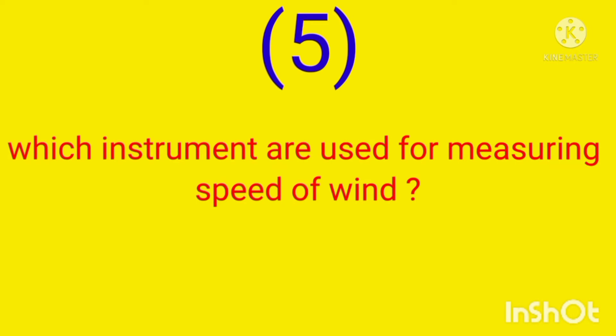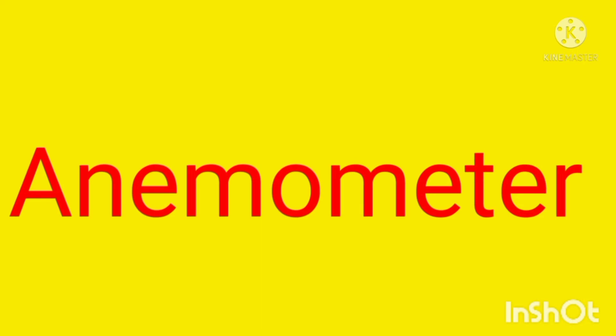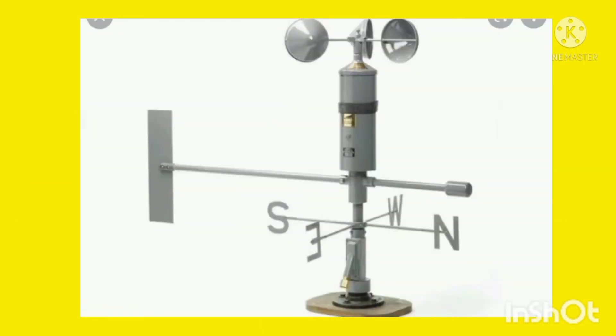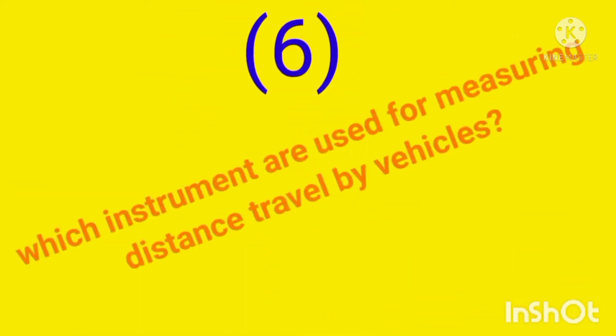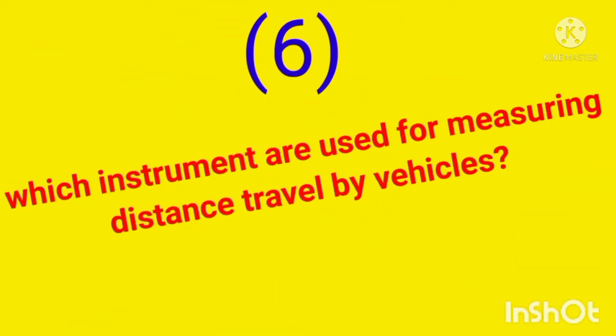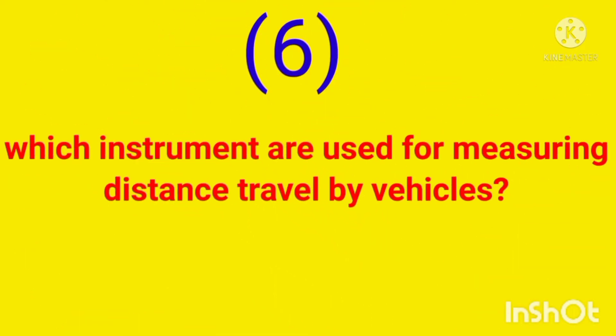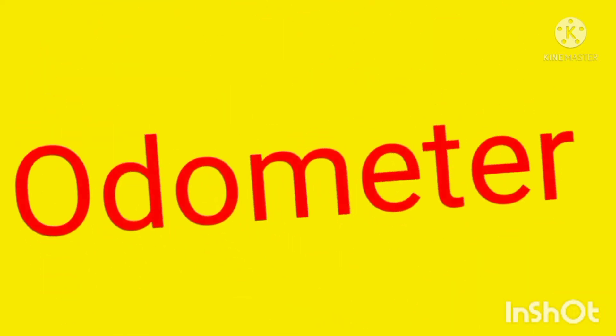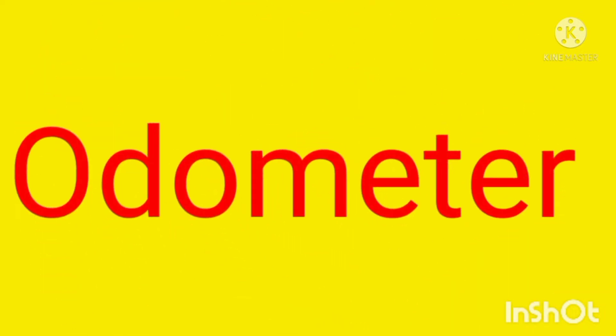Which instrument is used for measuring the speed of wind? Anemometer. Which instrument is used for measuring the distance traveled by a vehicle? Odometer.